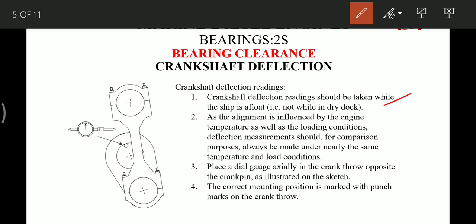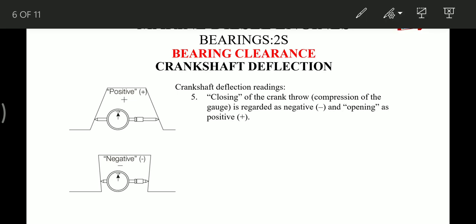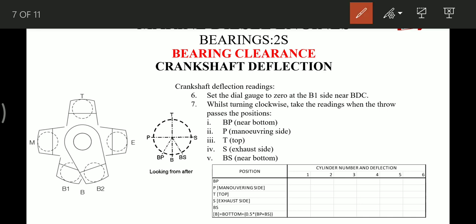For taking readings, dial gauge is actually placed in the crank throw opposite to the crank pin, as we can see in the diagram. This is the crank pin and it is placed just opposite on the crank web. The mounting position is marked on the crank web - this is a punch mark which is there on the crank web, so we have to place the dial gauge or deflection gauge. Closing of the crank throw is regarded as negative and opening is regarded as positive, that we take it as an assumption for the readings.